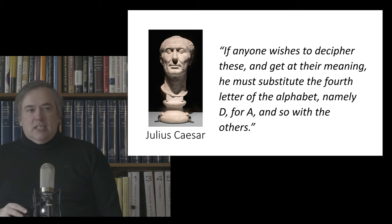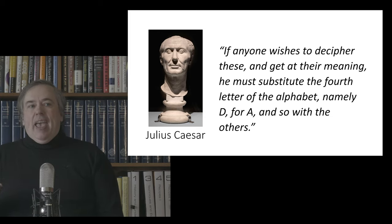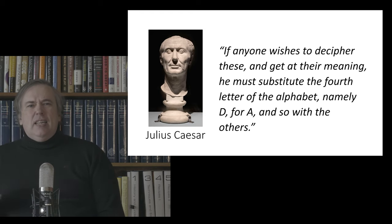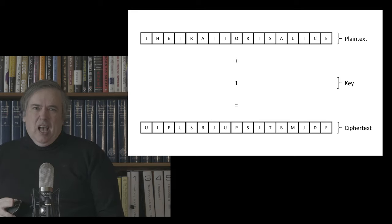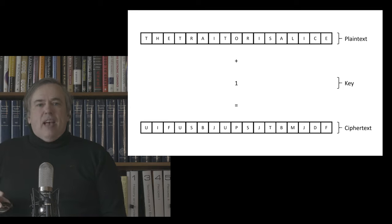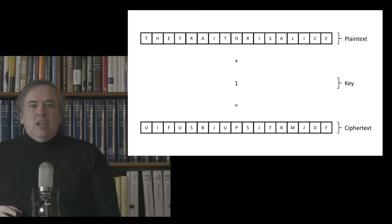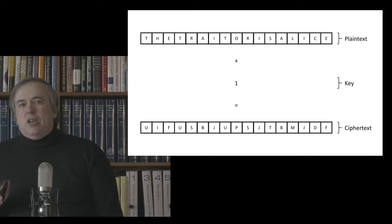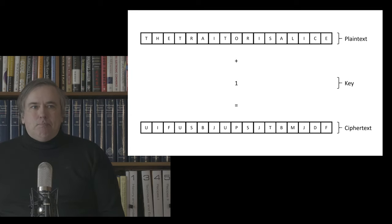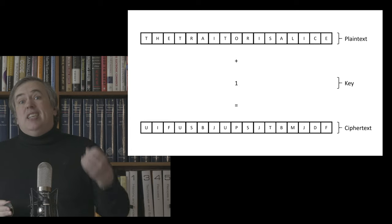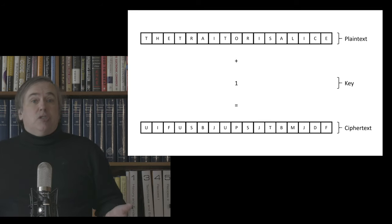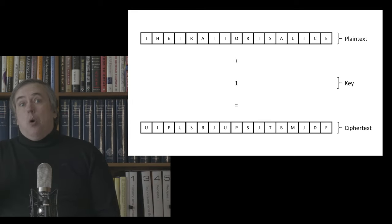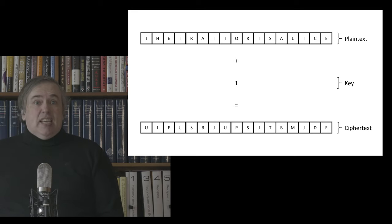Augustus changed the key: he wrote B for A, C for B, and the rest on the same principle — using AA for Z. Suetonius apparently heard this from another source but didn't try it himself, because if you try it you quickly realize you'd never have a standalone A. A true Caesar cipher is just a shift — breaking it is trivial, with only 26 possibilities. Brute force gives you the result in 26 tries, including one where the shift is zero and the ciphertext and plaintext are the same.